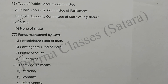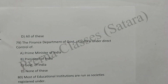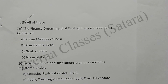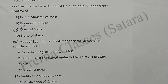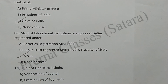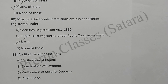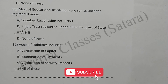Question 78: The three Es mean efficiency, economy, and effectiveness — all of these. Option D is correct. Question 79: The finance department of Government of India is under the control of the Government of India. Option C is correct. Question 80: Most educational institutions are run as societies registered under the Societies Registration Act 1860, public trust registered under Public Trust Act of the state — A and B both. Option C is correct. Question 81: Audit of liabilities includes verification of capital, examination of payments, verification of security deposit, and all of these. Option D is correct. These are the multiple choice questions for the exam. Thank you.